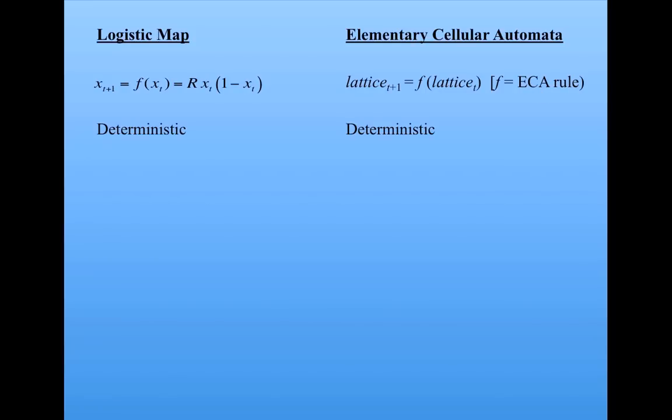Both logistic map and elementary CAs are completely deterministic. There's no randomness involved. They both iterate in discrete time steps.